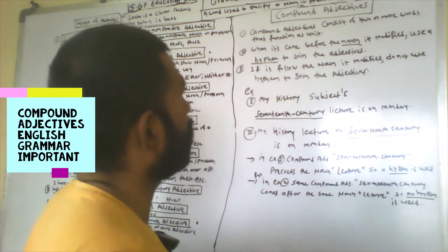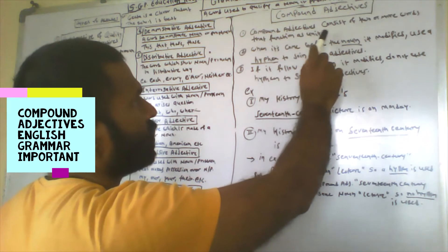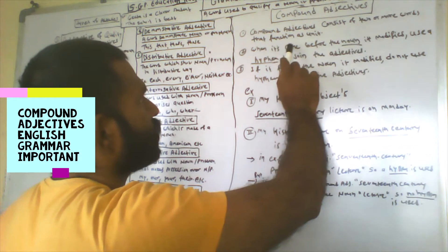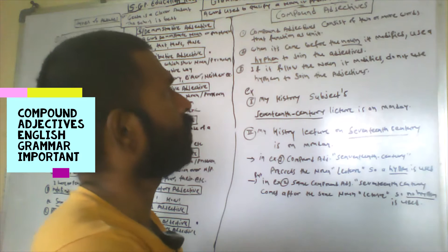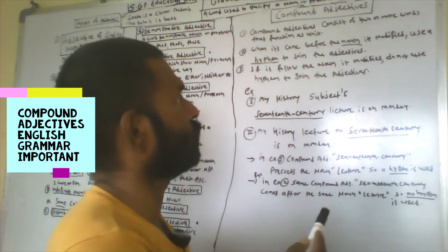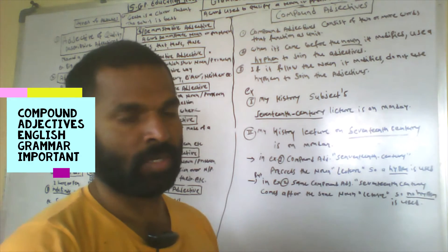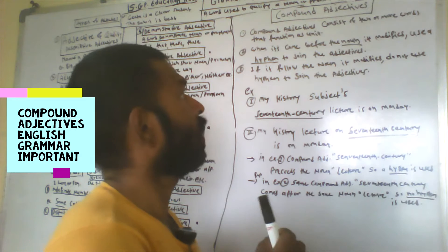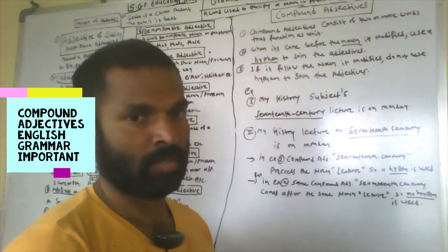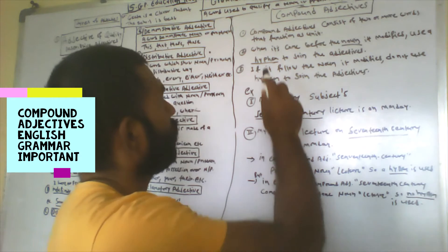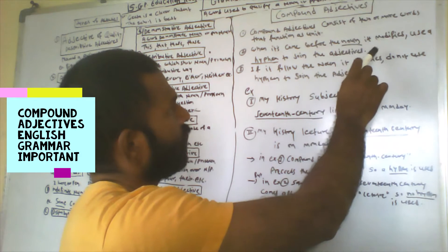A very important topic is compound adjective. A compound adjective consists of two or more words that function as a unit. When a sentence consists of two or more words functioning as a unit — not two separate adjectives, but combined as one unit — that comes before the noun it modifies.